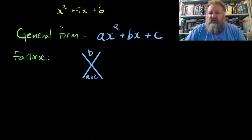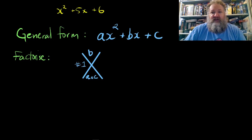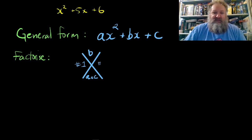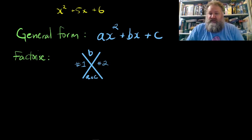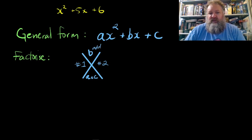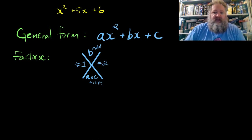We have two spots left in our Big X to fill with two numbers. These two numbers must add together to give the value of b, and they must multiply together to give the value of a times c. Finding these numbers is the key step.